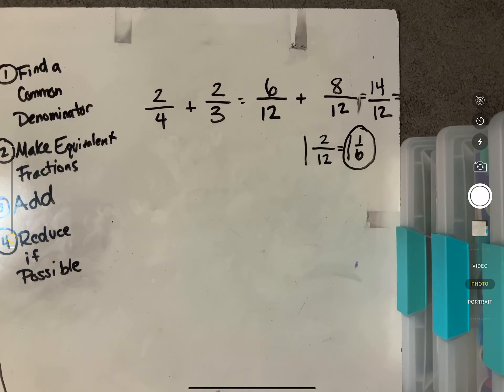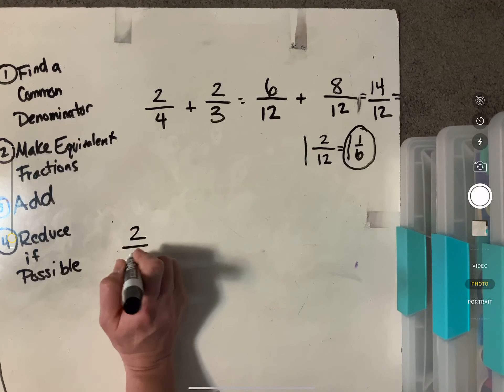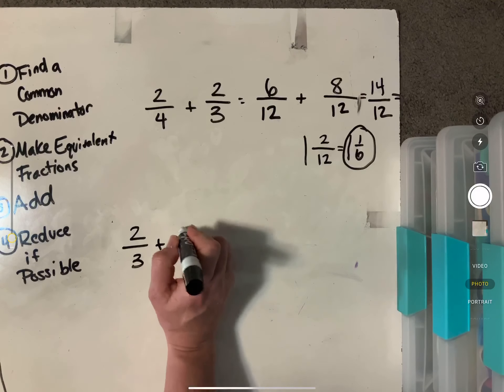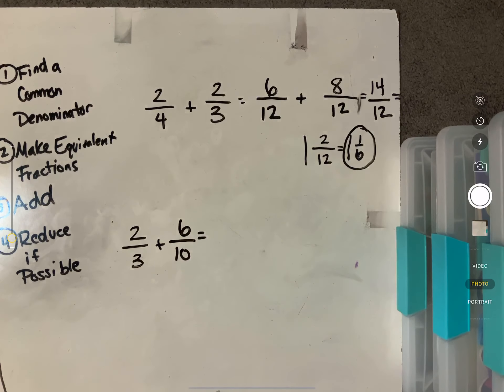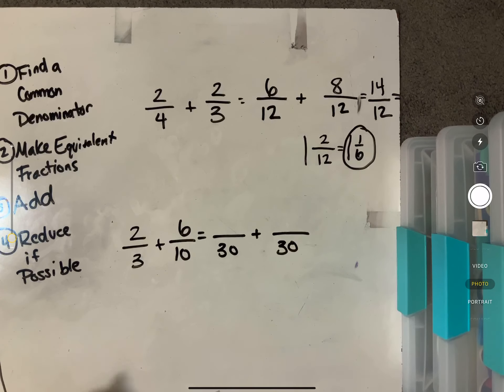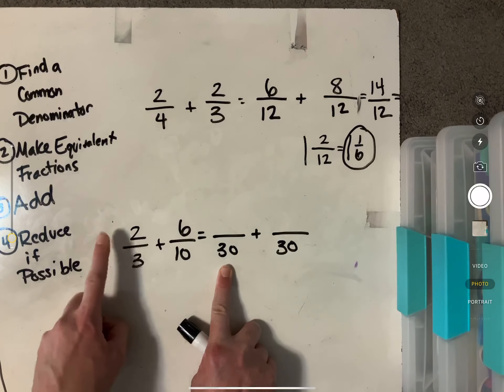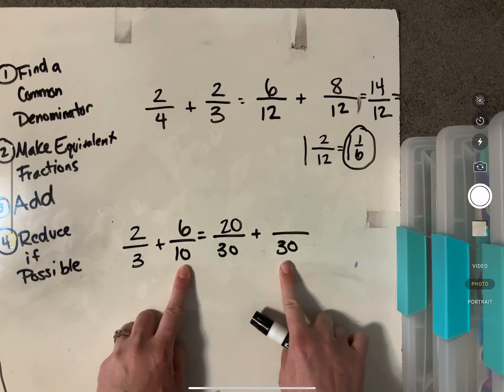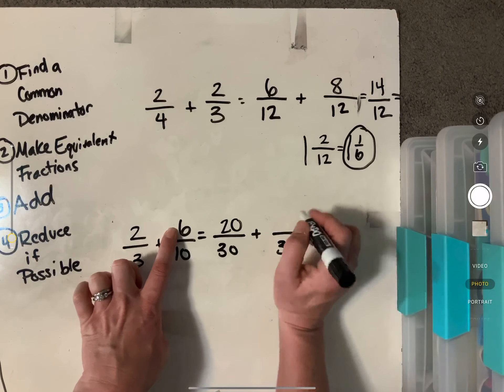All right, let's do another one. How about two thirds plus six tenths. Okay. So our common denominator here, I'm going to go with 30 because if we counted by threes, the only number ending in zero is going to be 30 until that's going to be the only one that's going to be common for both of these. So 10, 20, 30, and three times 10 is 30. So I'm going to use 30 as my common denominator. So three times 10 is 30. Two times 10 is 20. 10 times three is 30. Six times three is 18.